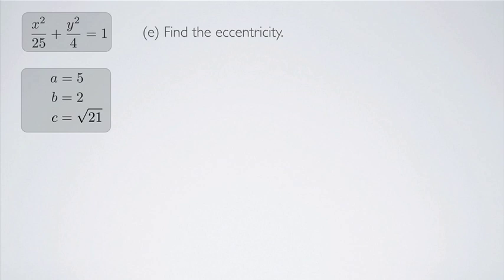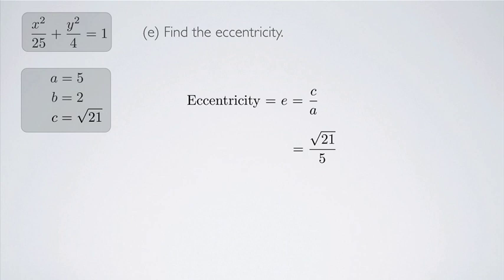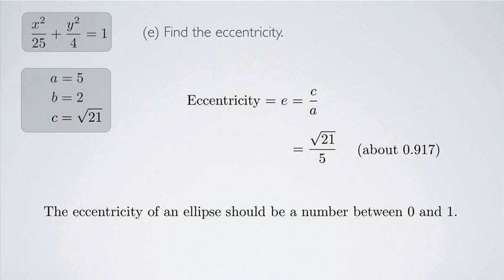Now we find the eccentricity e, given by e = c / a. Since we know c = √21 and a = 5, that gives e = √21 / 5 ≈ 0.917. The eccentricity of an ellipse must be between 0 and 1, and since 0.917 satisfies that, we're good.